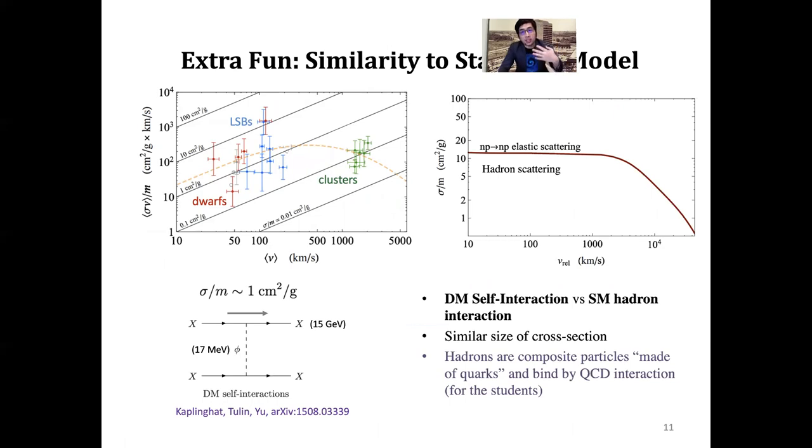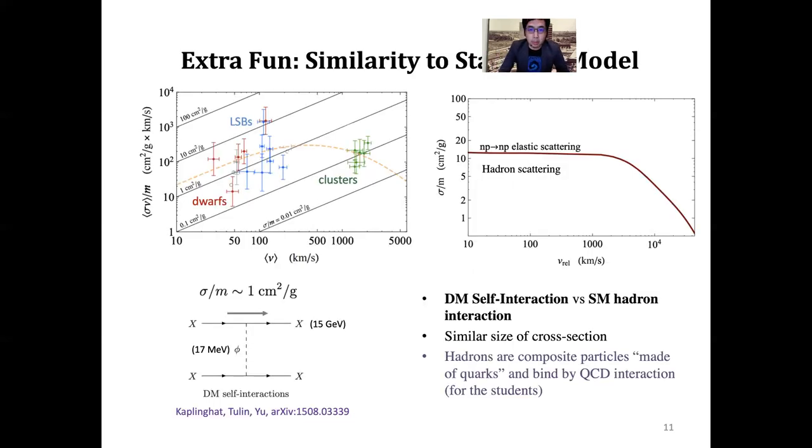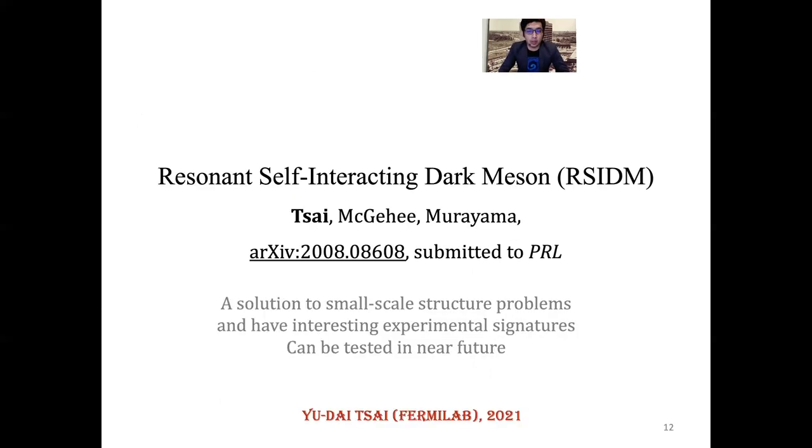These can be accounted by considering a dark matter model with a light mediator. If you look at the cross-section itself, it is very similar to the meson or nucleon scattering cross-section or hadron scattering cross-section. One interesting idea would be to model this based on the QCD hadronic sectors. This brings us to resonance self-interacting dark mesons, which is a different class of model compared to toy models or dark photon models.